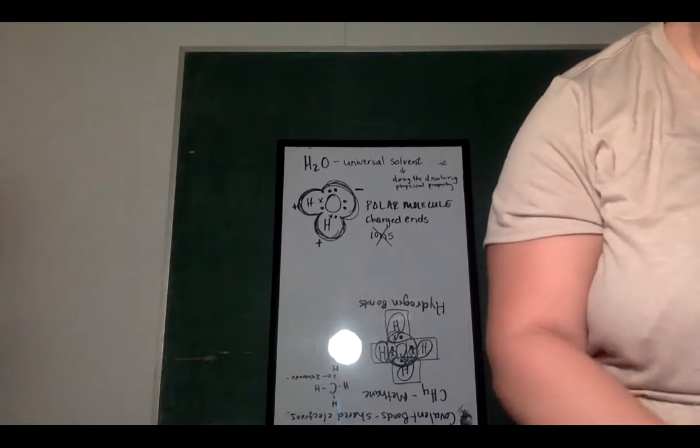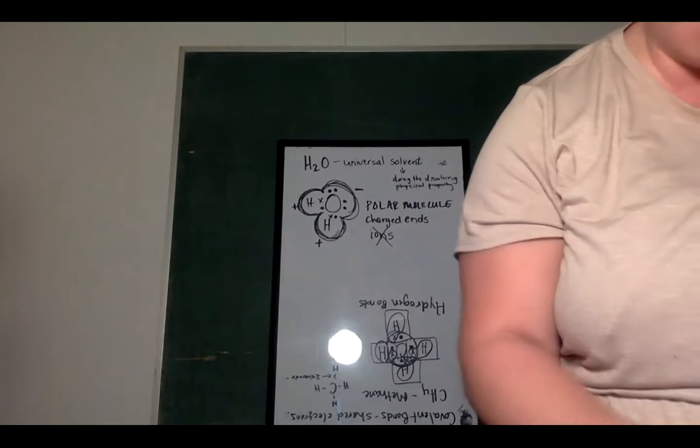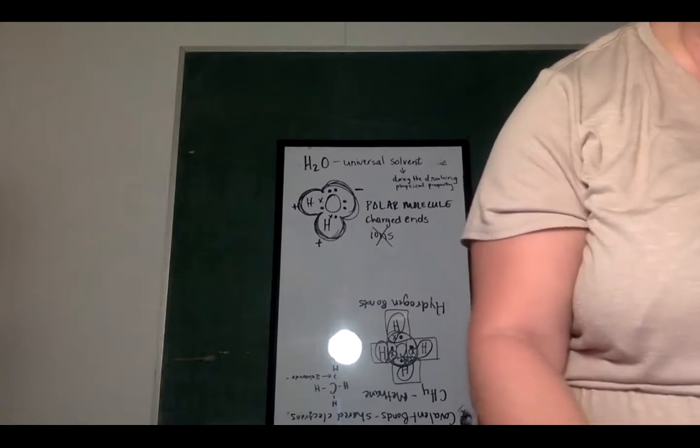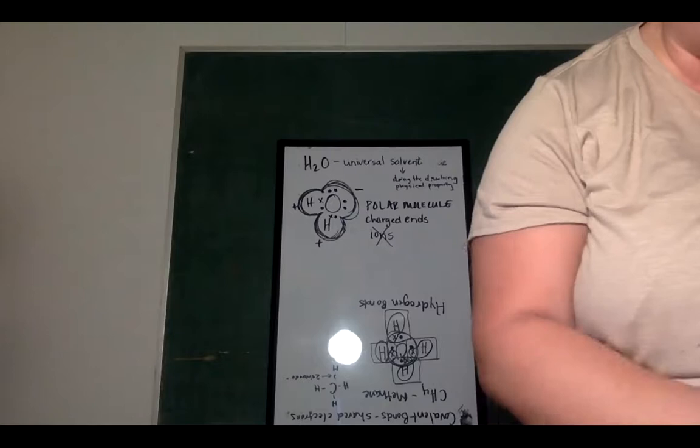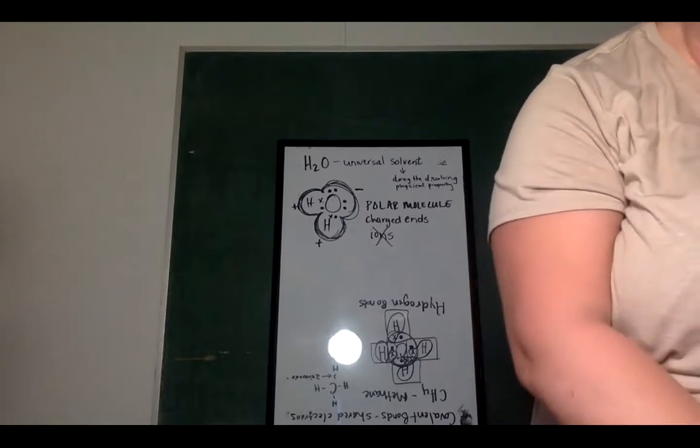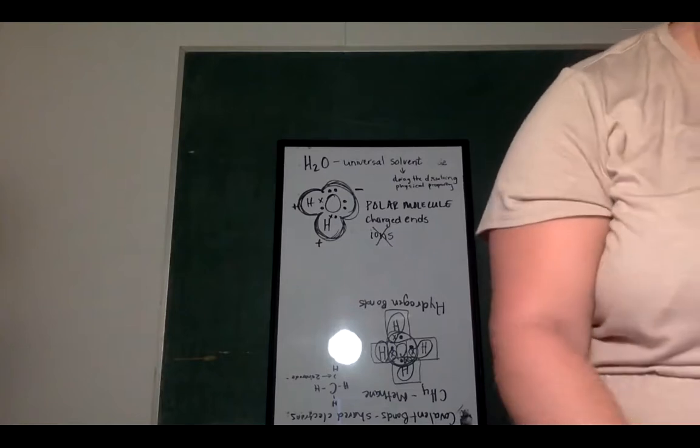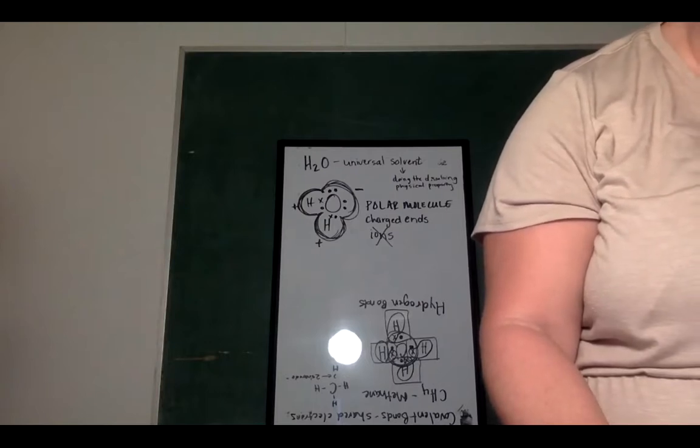So in this section that I have taught you now, you have vocabulary words: molecule, compound, chemical bond, which are ionic bond, covalent bond, the word ion, you have polar compound, and hydrogen bond. I didn't talk about that specifically.